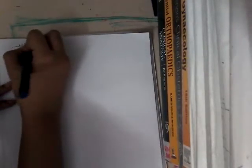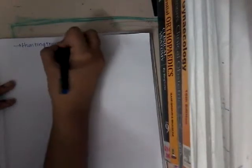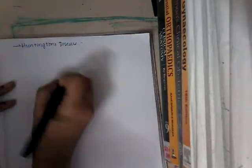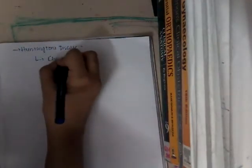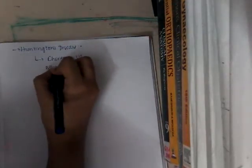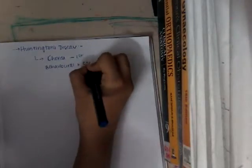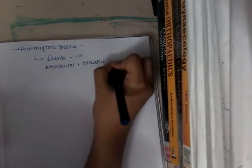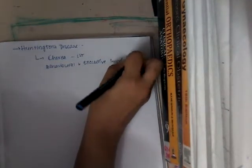The next type of dementia is Huntington's disease. Huntington's disease is a predominant neurodegenerative disorder basically involving chorea first, and then there is behavioral disorder and executive impairment. The detailed features we will see in a later class after Parkinsonism, so that it becomes easier.